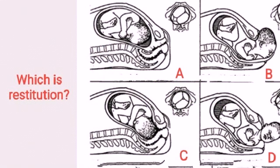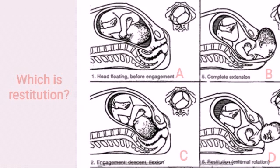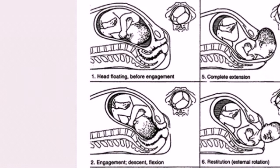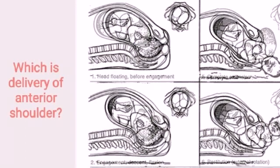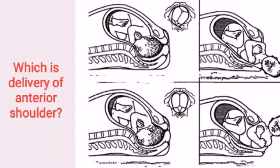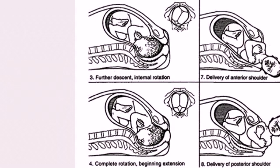Identify the fetal attitude: D. Which is delivery of the anterior shoulder? Answer: B.